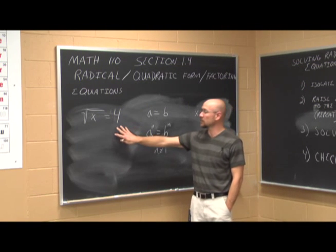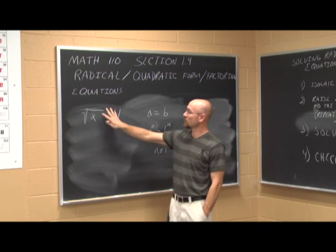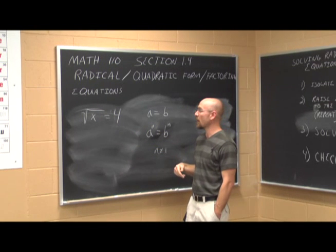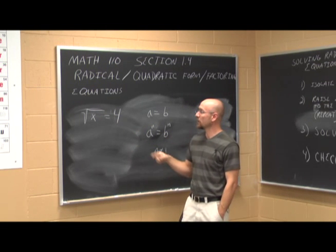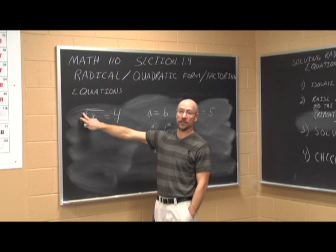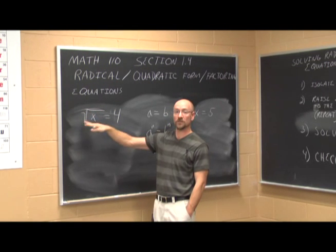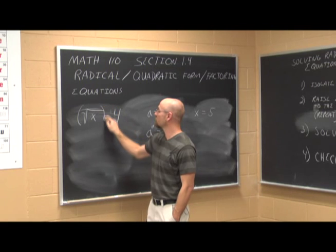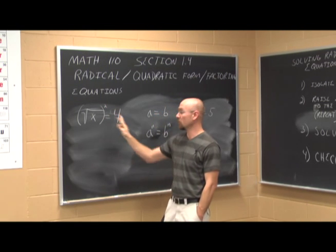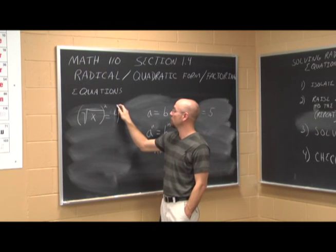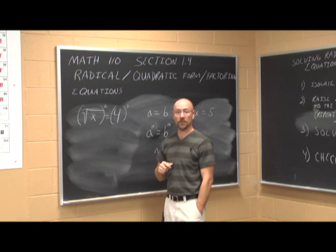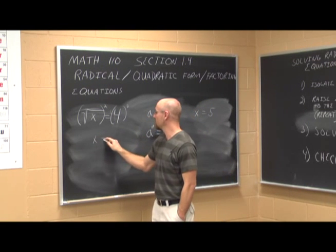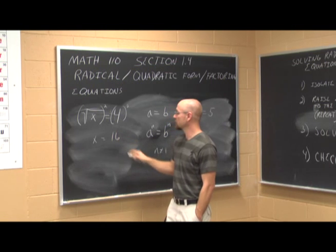The first thing we're going to look at is this radical equation. In order to solve radical equations, we've got to eliminate the radical, and we can do that by identifying the index. In this case, it's a square root, so our index is 2. To get rid of a square root, we can square it. What we do to one side, we do to the other — our property of equality. When I do that, I get x equals 4 squared, which is 16.